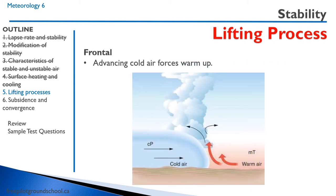Frontal lift occurs when there's a weather front, such as a cold front, where the cold air forces itself under the warm, moist air. In this case, we have a continental polar air mass advancing on a maritime tropical — a warm, moist air mass — forcing that warm, moist air up above it. As it forces it up, the air expands and cools, reaches its dew point, becomes saturated, and the water vapor condenses into water droplets forming clouds.